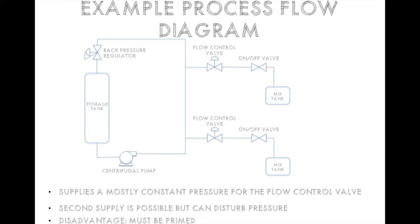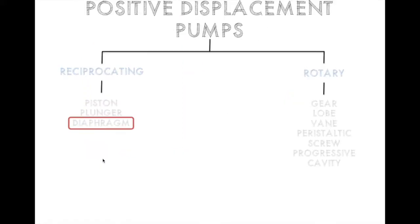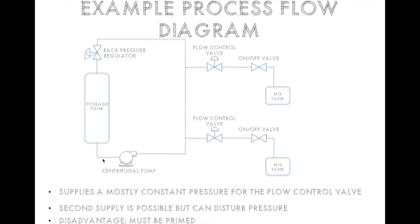A disadvantage of the centrifugal pump is that it has to be primed. If there were air between the storage tank and the centrifugal pump and you simply turned it on, it would do absolutely nothing. You have to push some liquid into the centrifugal pump in order to get it pumping.